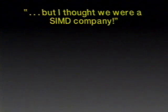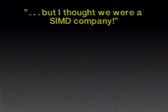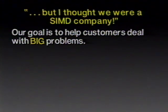Now I'd like to turn to a different question that some people have asked me over the last years: this machine is very different from the CM2 — why is it so different? I thought we were a SIMD company. And my answer is: we are not a SIMD company. The CM5 is very different from the CM2 at the lowest level, but at the highest level it reflects the continuity of our goals. The goal of Thinking Machines is to help customers deal with big problems, rather than to build a particular kind of hardware.